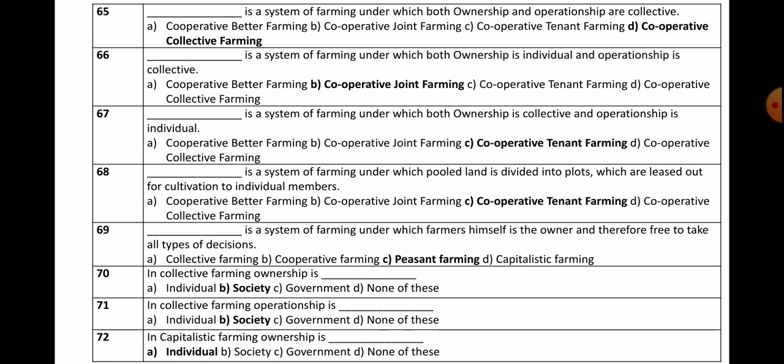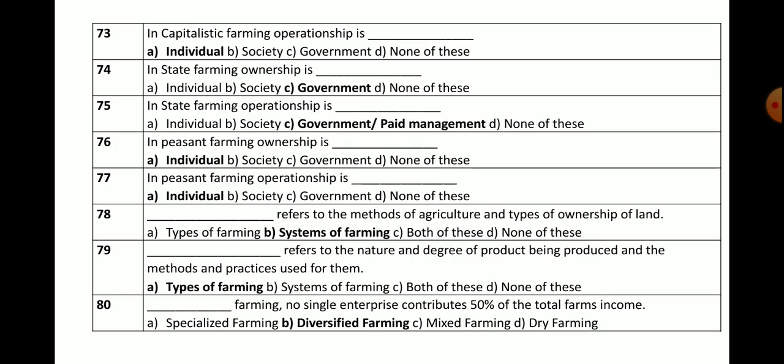Question numbers 72 and 73: In capitalistic farming, ownership is individual and operationship is also individual. Keep in mind — in capitalistic farming, both ownership and operationship are in the hands of the individual farmer.